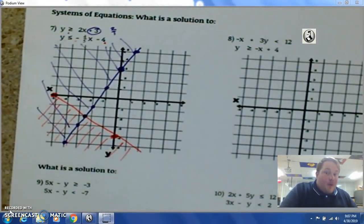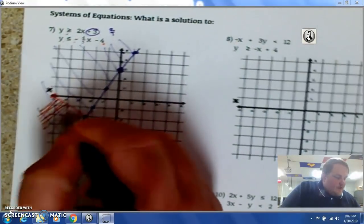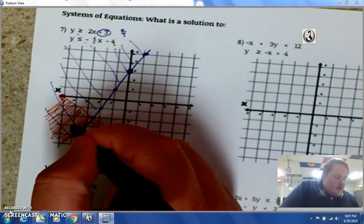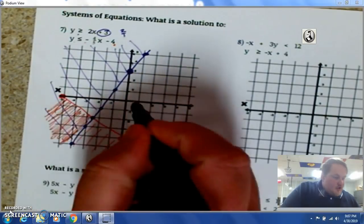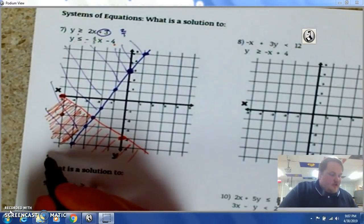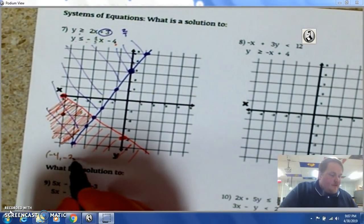But, any point. That's in this region. Works as a solution. So, like. Negative 4. Negative 3. Is a solution. Negative 5. Negative 2. Is a solution. So, you could put negative 4, negative 3. Put negative 5. Negative 2.